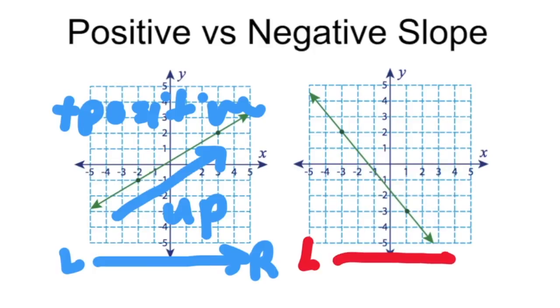Do the same thing for the second graph. Start on the left, move to the right. As you move from the left to the right, you see that the line goes down. That means that this line has negative slope.